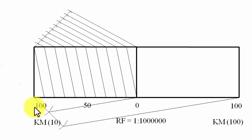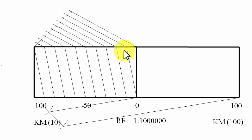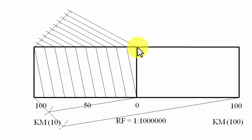We want more precision — a diagonal scale represents three different units. In this question we have only one unit, kilometers, but with different denominations: 100 km, 10 km, and 1 km. This small portion represents 10 kilometers. To get 1 kilometer divisions within it, dividing it directly into 10 parts is not easy on this small length.